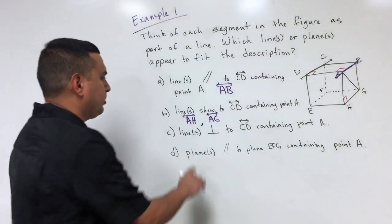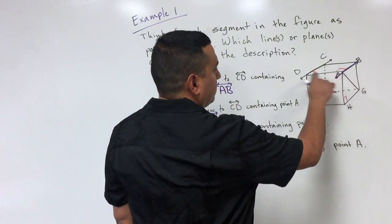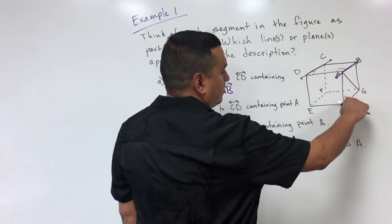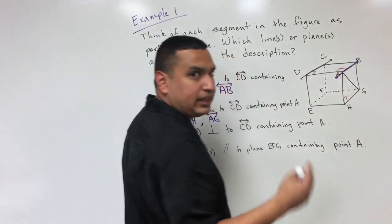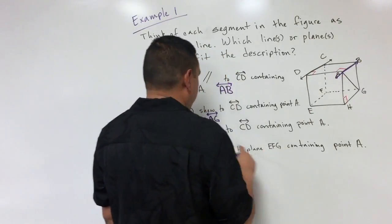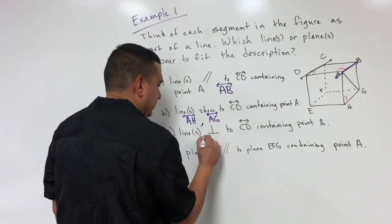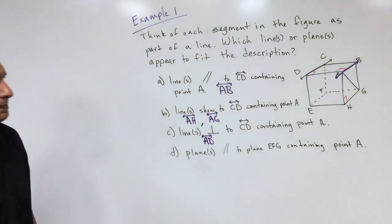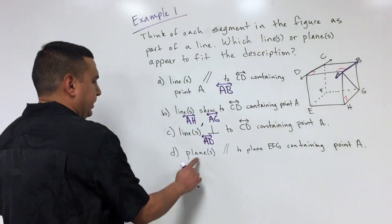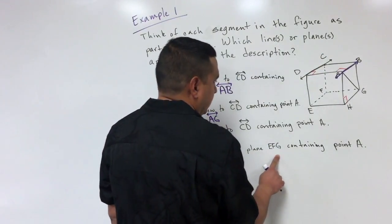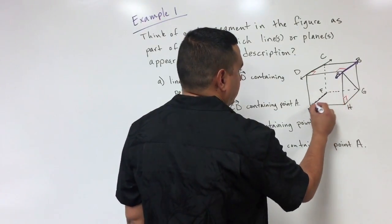For part c — perpendicular to CD containing point A — remember those little red squares are the symbol for a right angle, which is how we define perpendicular. For this one, line AD would be perpendicular and it goes through point A.